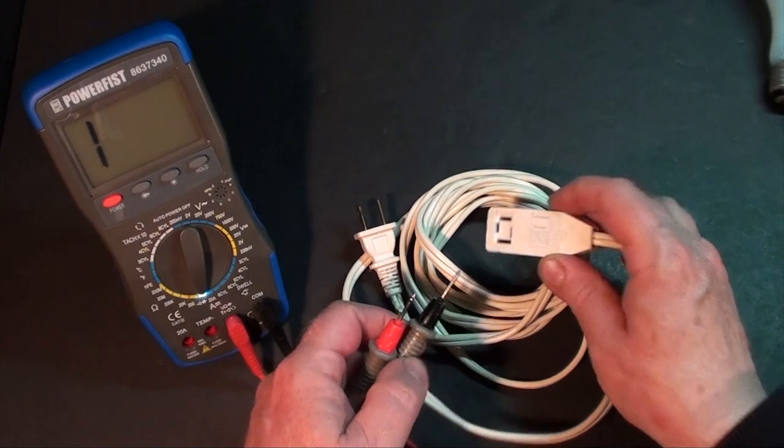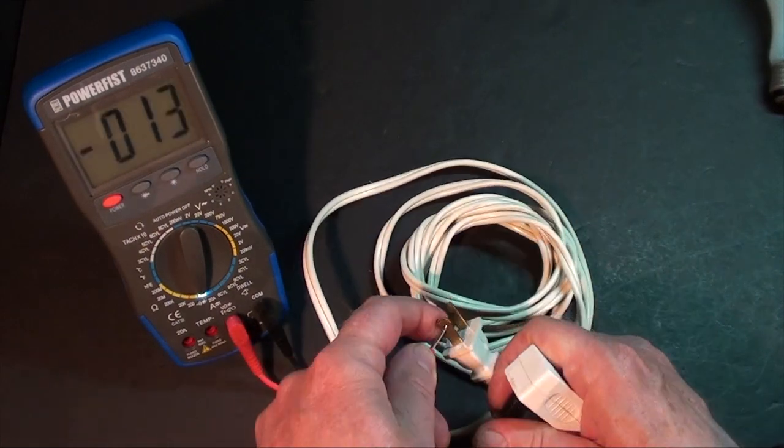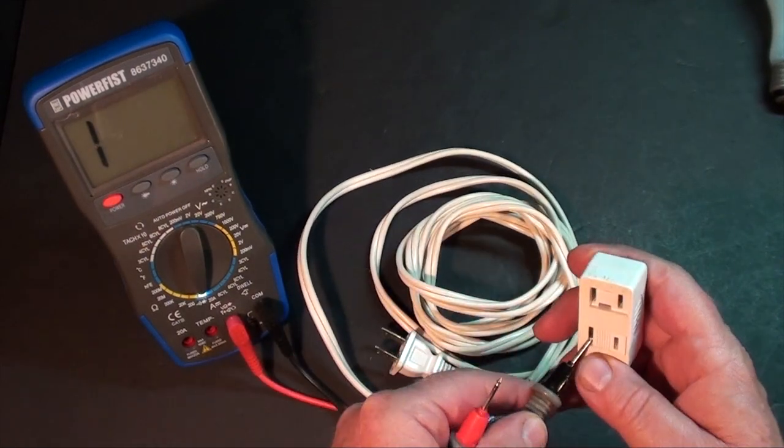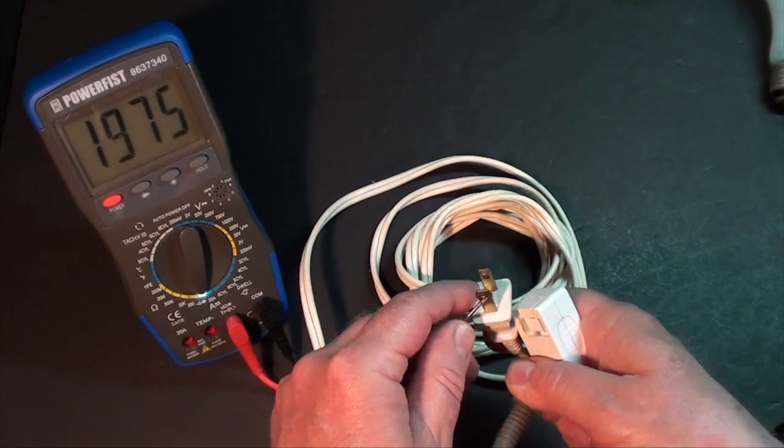Alright, same deal with this two-prong extension cord. The small blade goes in the hot slot. So, check for continuity in each of the plugs.